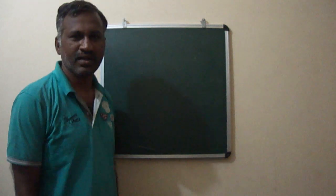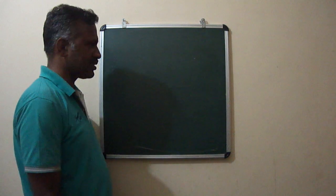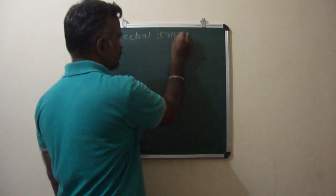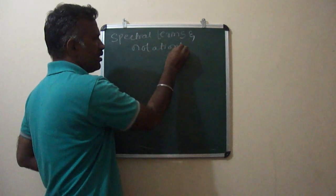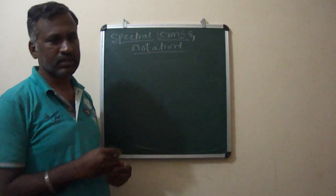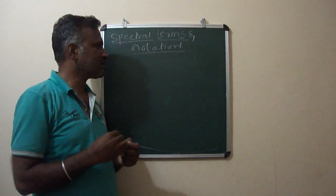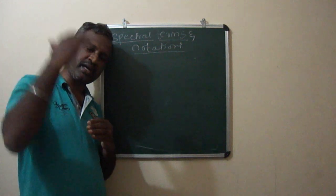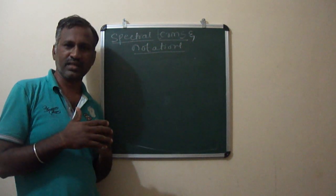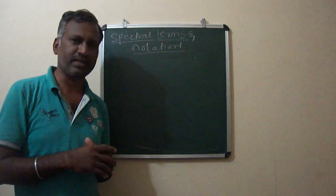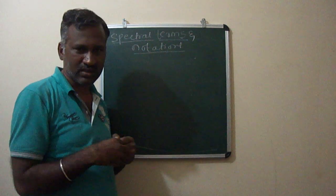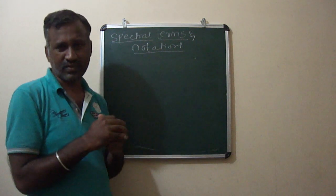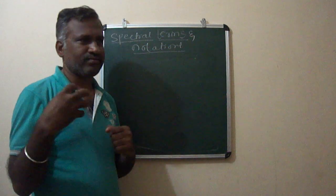Hello students, good evening to everyone. Today we shall discuss about spectral terms and spectral notations. We all know what is the reason for spectra — how do we get spectra. Spectra is obtained whenever you excite any atom, so the electrons present in the atom go to a higher energy state.